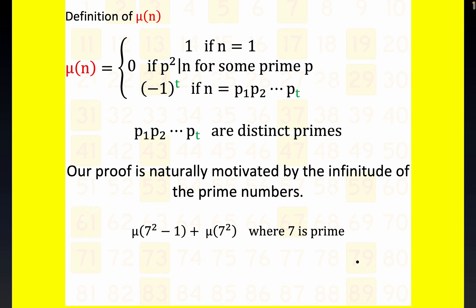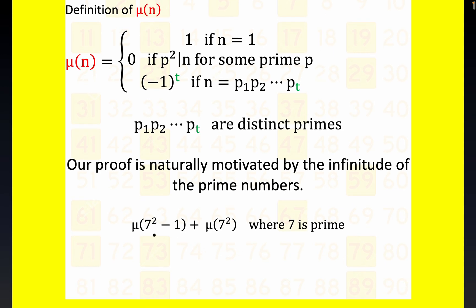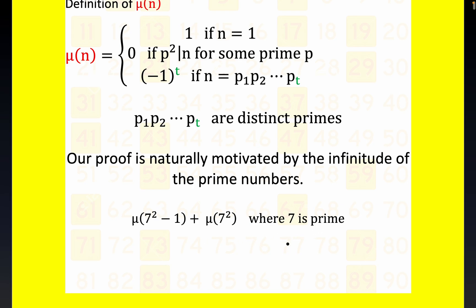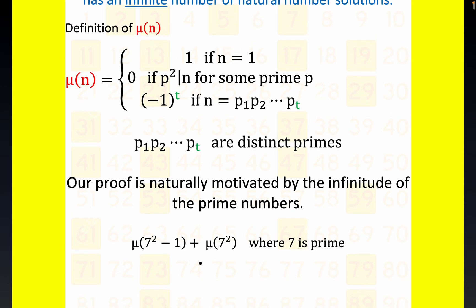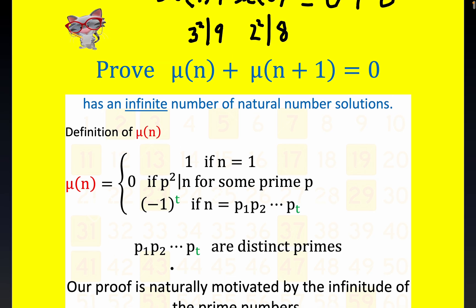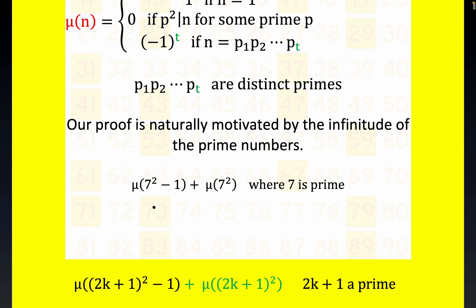Now again, this is another example right here. This would also be equal to zero. You guys can verify that if you want, but this would be μ at 48. And this is similar. Notice right here that this would be 48. 7 squared minus 1 is 48, and 4 divides 48. 4 being 2 squared. 4 divides 48.